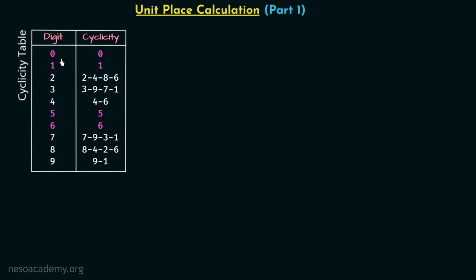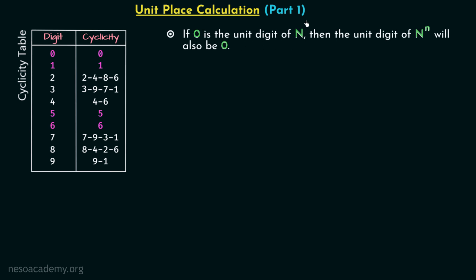Now we will look at the case when zero is the unit digit of a number N. The unit digit of N raised to power n will also be zero. This means if number N has zero at the unit place, then N raised to power n will also have zero at the unit place. Now we will see one example to understand this point better.